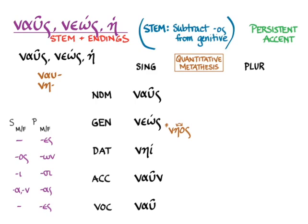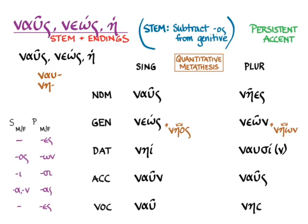In the plural, we get naes with the nae stem and the regular nominative plural masculine and feminine third declension ending. Genitive plural is naon and we get the shortened epsilon by the same principles of quantitative metathesis. And then in the dative plural, nausi, nu movable of course, accusative plural naus, and vocative plural naeas.